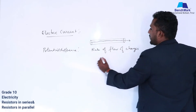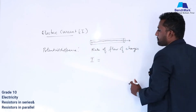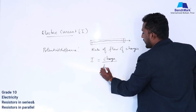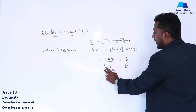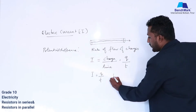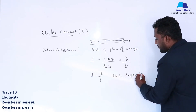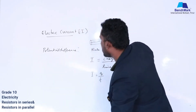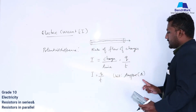Current is the rate of flow of charges, denoted by the alphabet I. Current is equal to charge divided by time: I = Q/T, where Q means charge and T means time. The unit of electric current is ampere, denoted by the alphabet A.